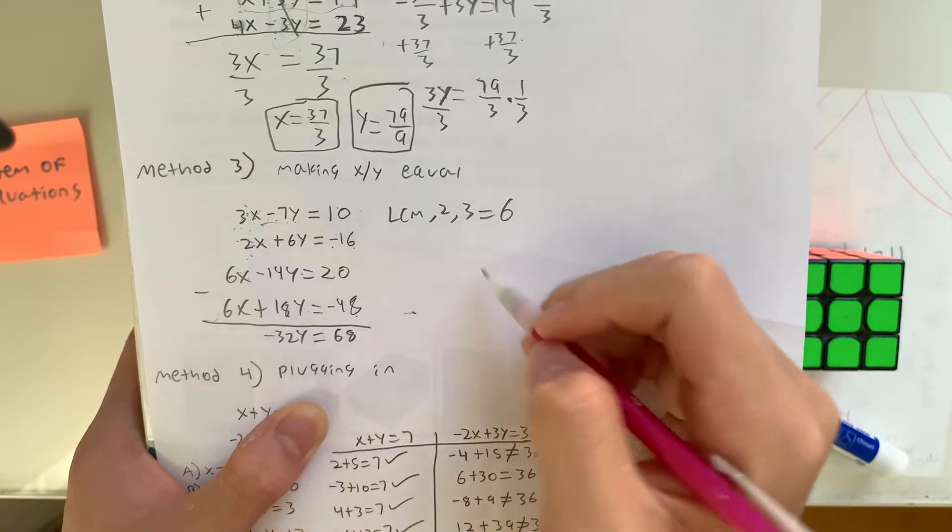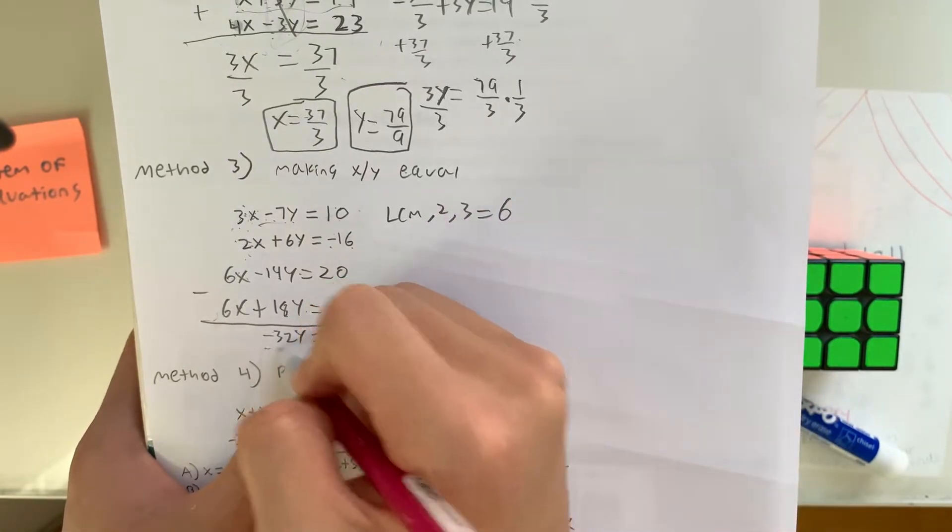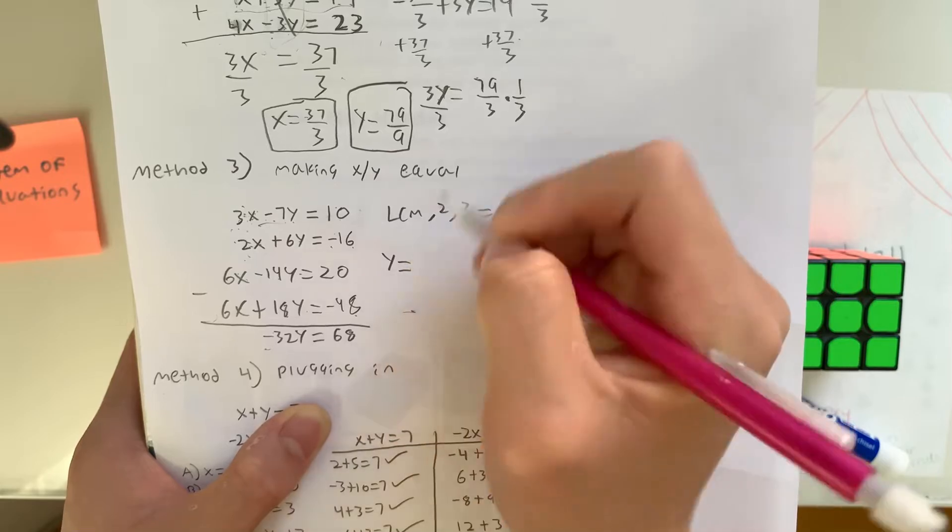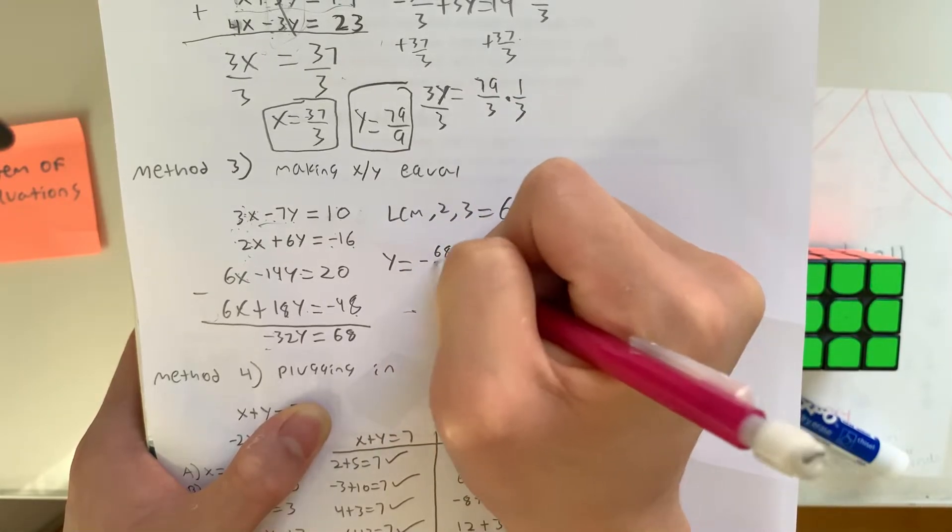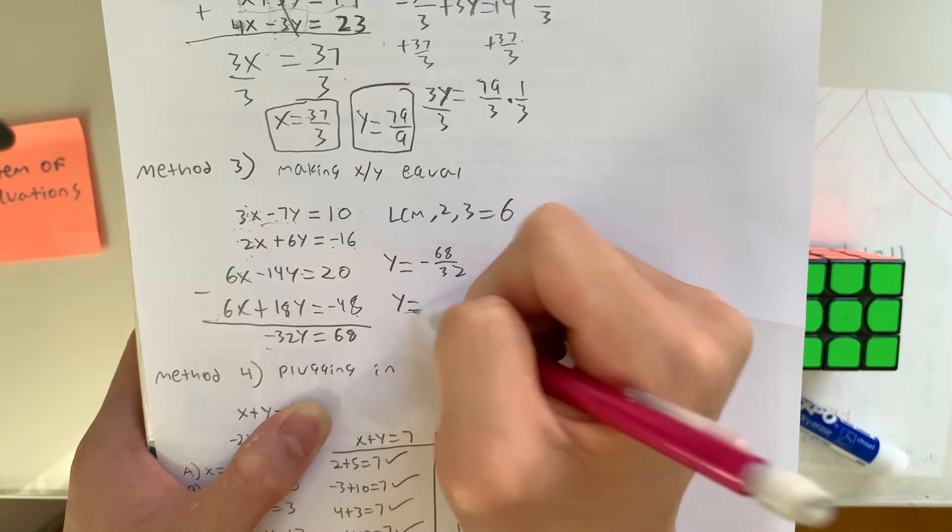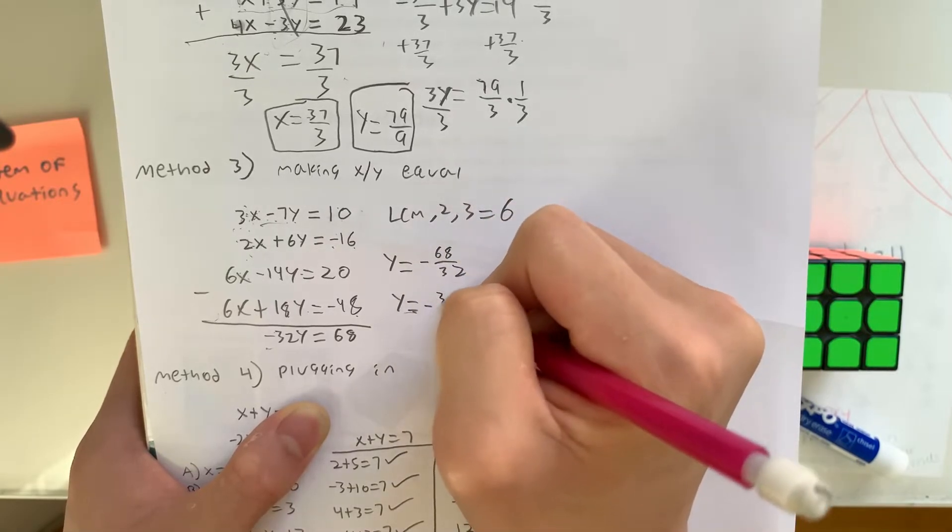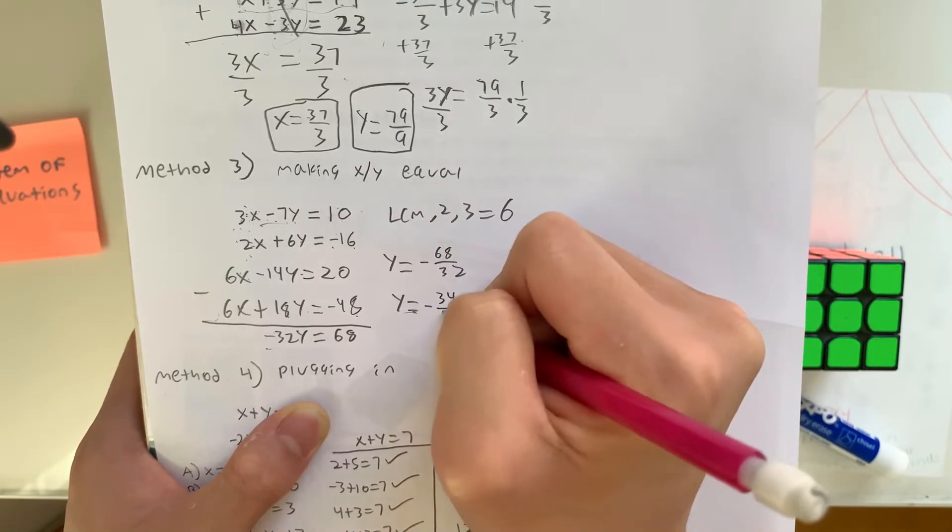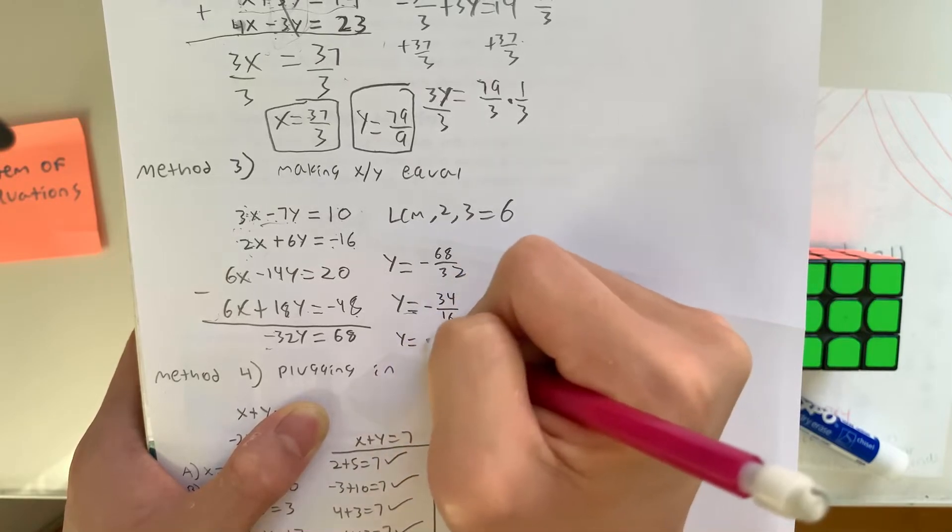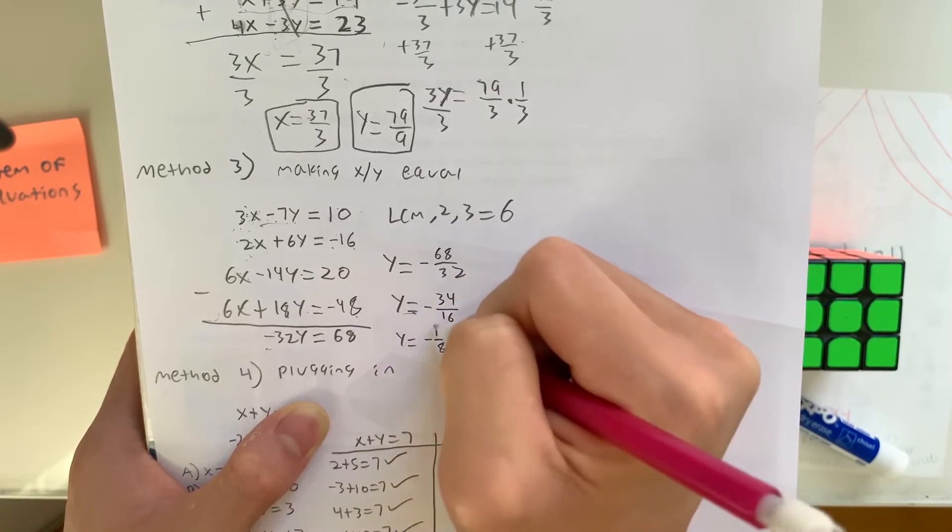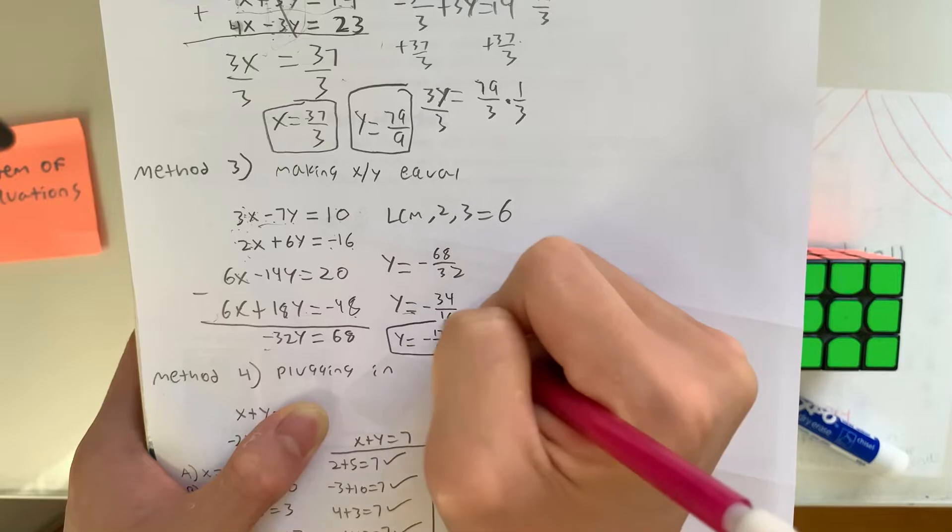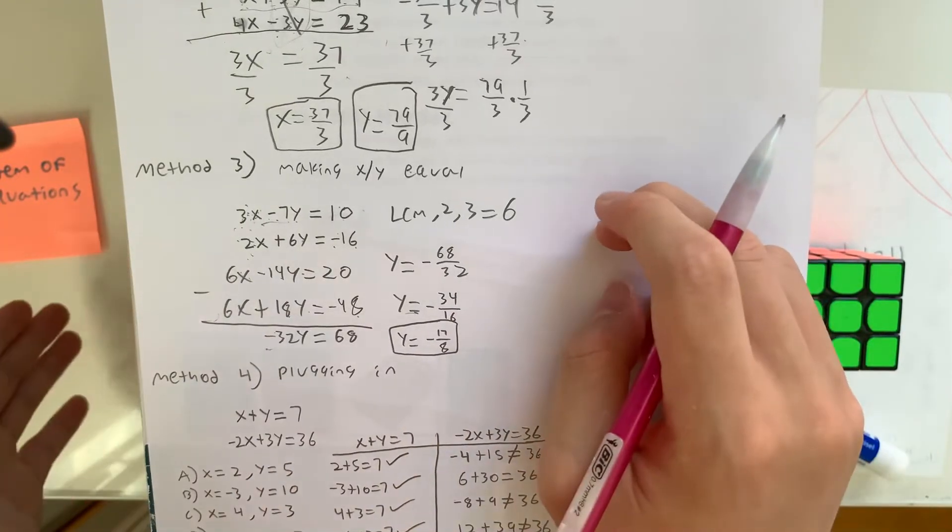We could divide both sides by negative 32, giving us y equals negative 68 over 32, which is equivalent to negative 34 over 16, which is also equivalent to negative 17 over 8. So now we have y, so let's solve for x.